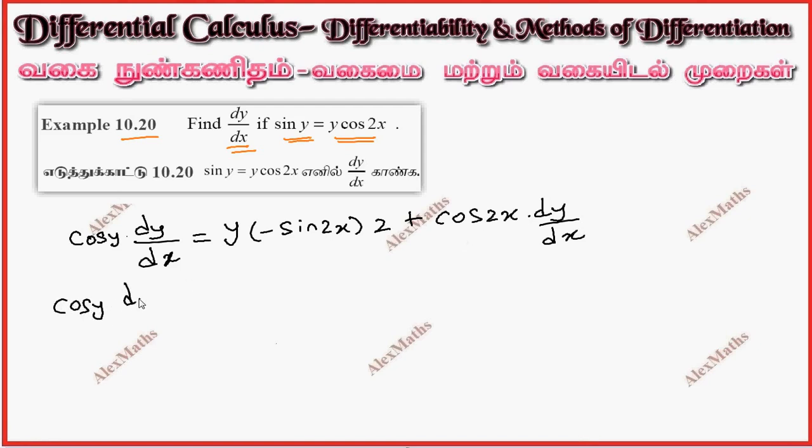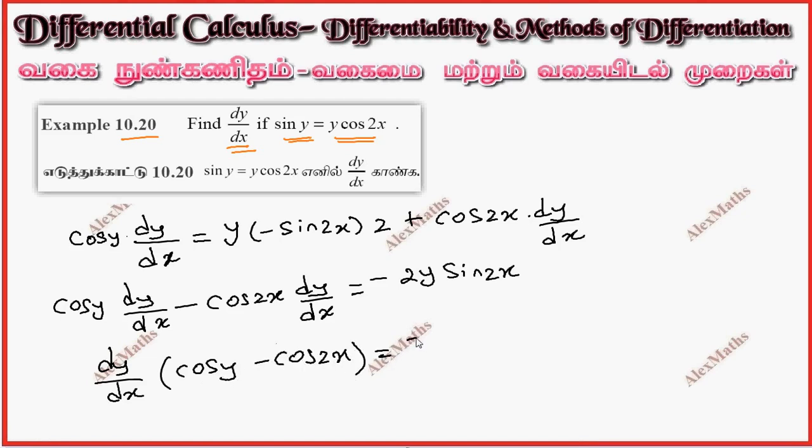So cos y dy by dx minus cos 2x dy by dx equal to minus 2y sin 2x. If dy by dx is common remaining one cos y minus cos 2x minus 2y sin 2x.